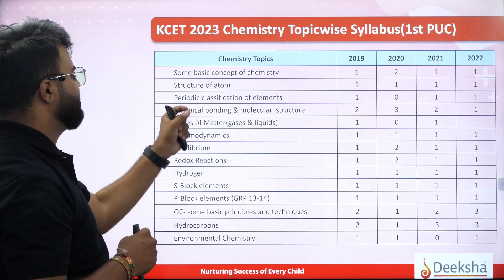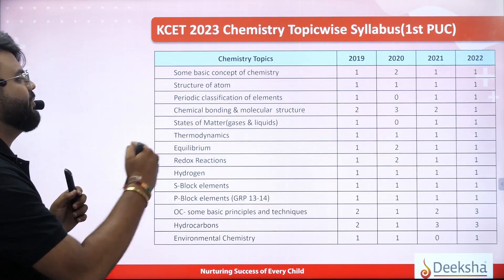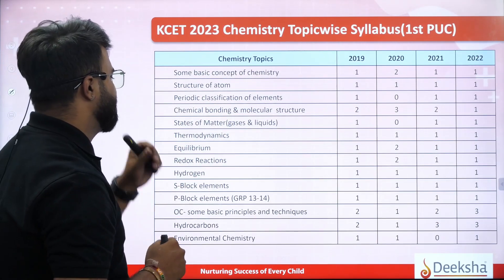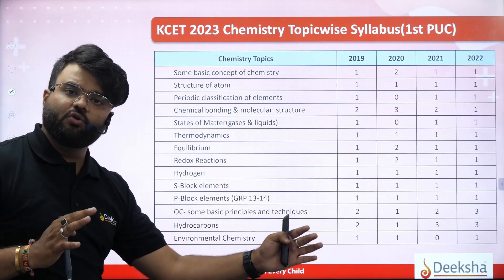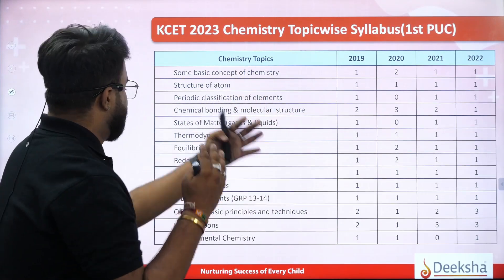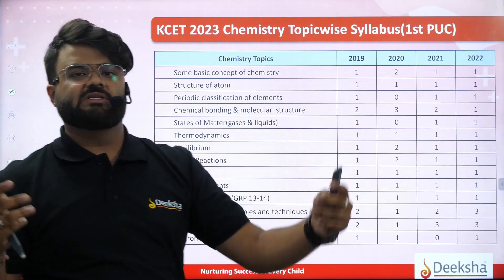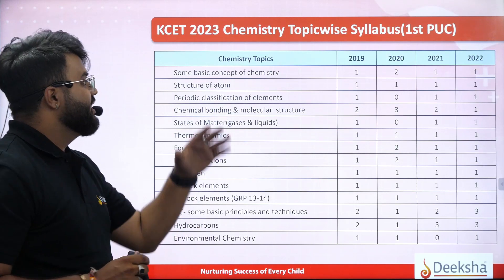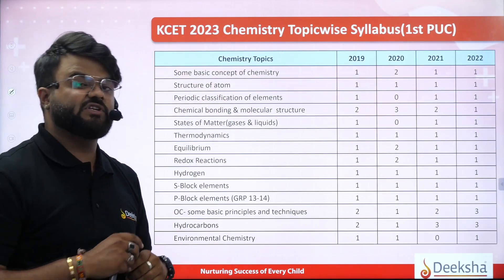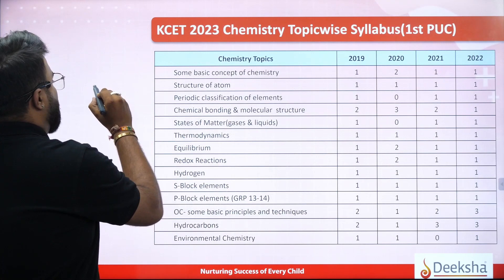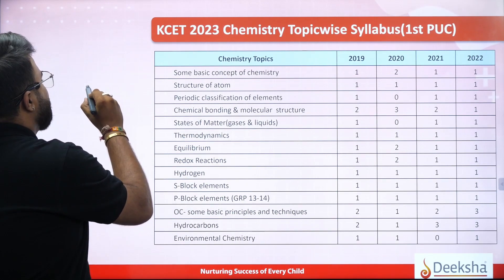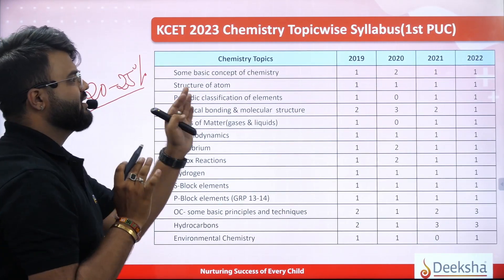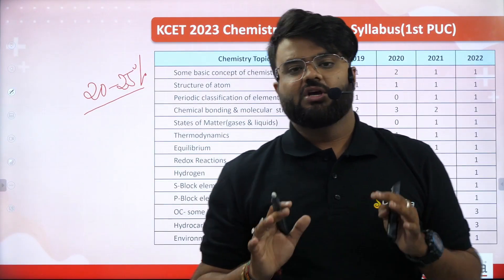First PUC Chemistry chapters: basic concepts of chemistry, structure of atoms, periodic classification of elements, chemical bonding, states of matter, thermodynamics, equilibrium, redox reaction, hydrogen, S-block, P-block, some basic concepts and principles, hydrocarbons, and environmental chemistry. These are the first PUC syllabus chapters. Almost 22 to 25% of the questions are from the first PUC syllabus.